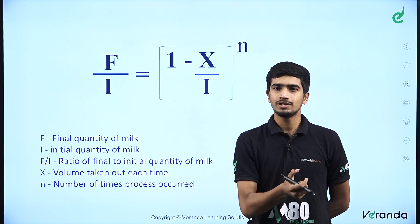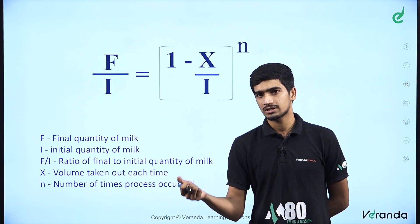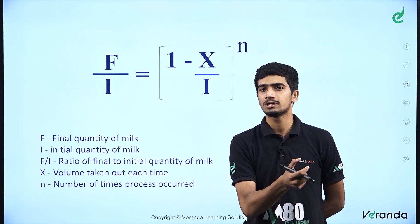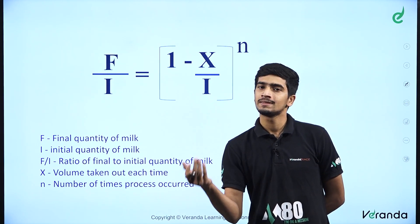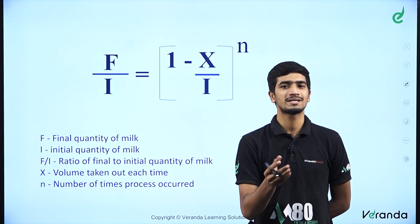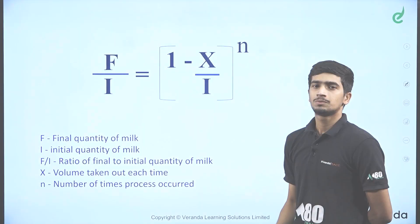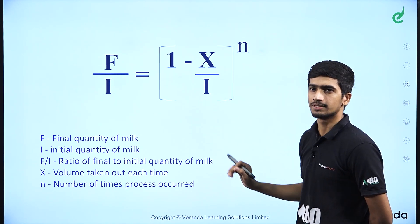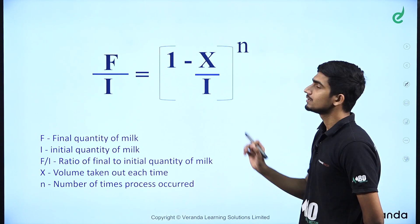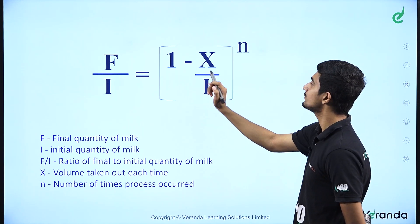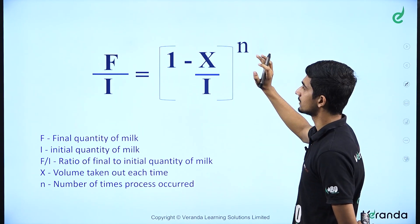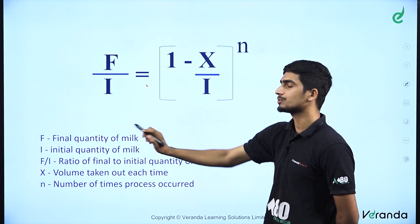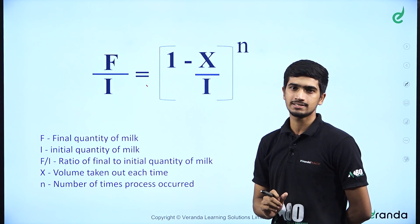We have a mixture of 9 liters. It is a mixture of milk and water. We have repeated dilution — we have to repeat this process, adding milk and water. To solve this type of question, we use the equation: f by i is equal to 1 minus x by i, whole raised to n. F is the final quantity of milk, and I is the initial quantity of milk.